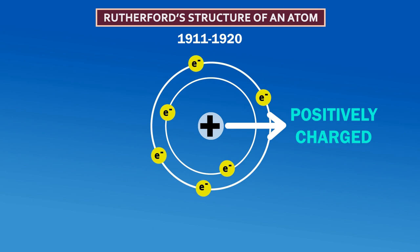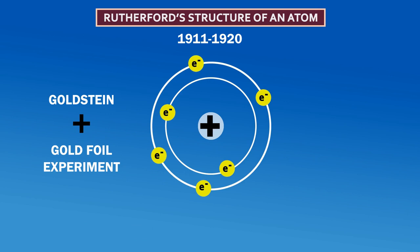Between the years 1911 to 1920, using observations of Goldstein and the gold foil experiment, Rutherford came to the conclusion that the positive charge of the nucleus is because of positively charged protons.